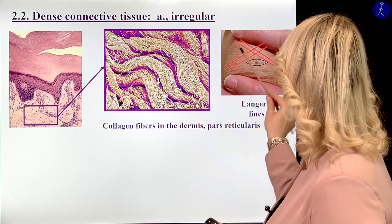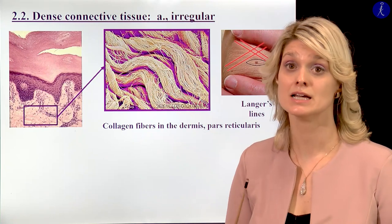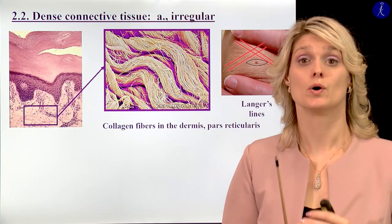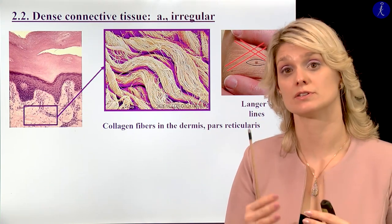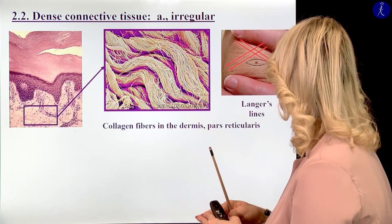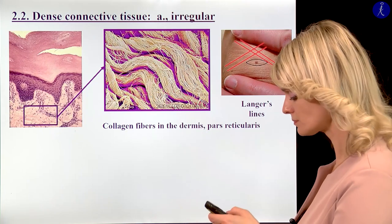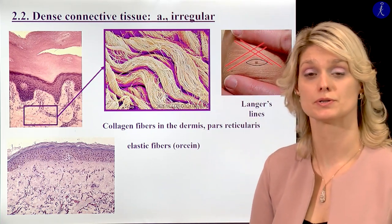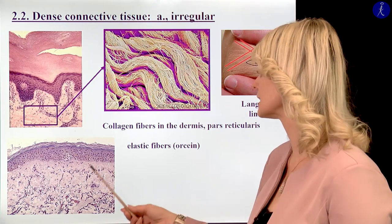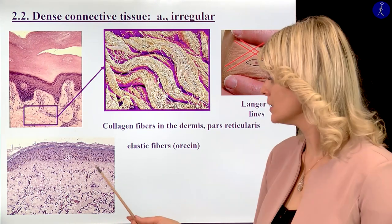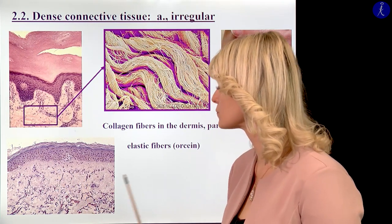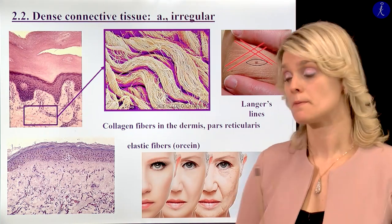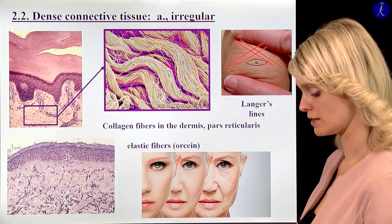Surgeons always follow the direction of these Langer's lines, because if they cut perpendicularly to these lines, correct healing is not possible. Also within the dermis of the skin, we have a lot of elastic fibers. The special staining of elastic fibers is the orcein staining — you can see dark brownish fibers within the skin, and the number of these will decrease during aging, which is why we have this change in the skin over time.